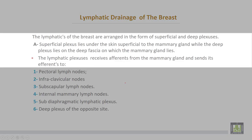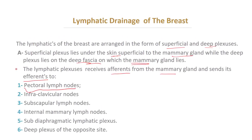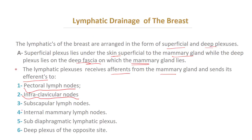The lymphatic drainage of the breast: lymphatics are arranged in the form of superficial and deep plexuses. The superficial plexus lies under the skin, superficial to the mammary gland, while the deep plexus lies deep to the mammary gland. The lymphatic plexus receives afferents from the mammary gland and sends efferents to pectoral lymph nodes, then infraclavicular, subscapular, internal mammary, subdiaphragmatic, and the deep plexus of the opposite side.